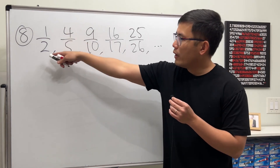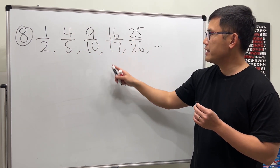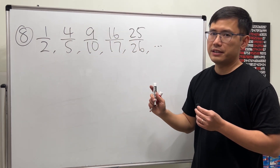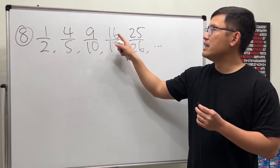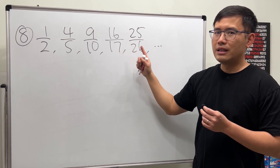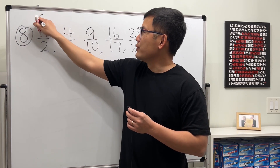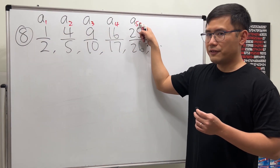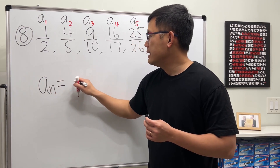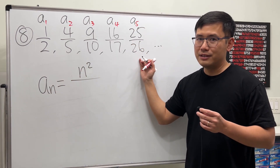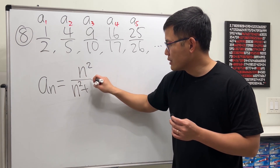Last one: 1/2, 4/5, 9/10, 16/17, 25/26. The numerators are 1, 4, 9, 16, 25 — perfect squares — so the top is n². The bottom is always one more than the numerator, so it's n² + 1. Therefore a_n = n² / (n² + 1).